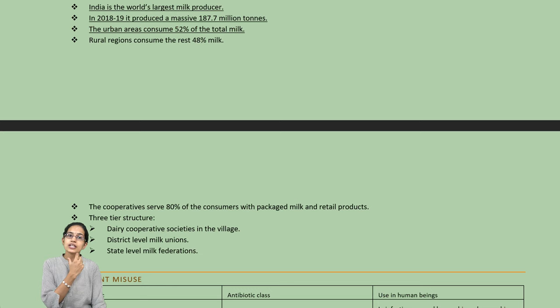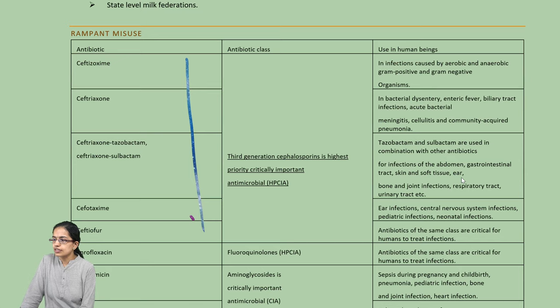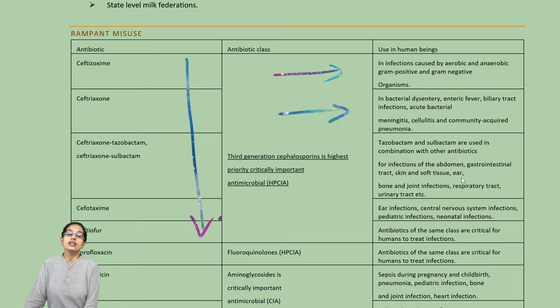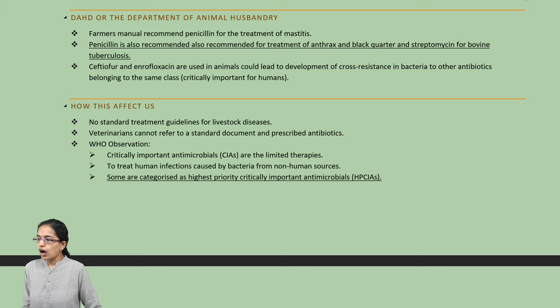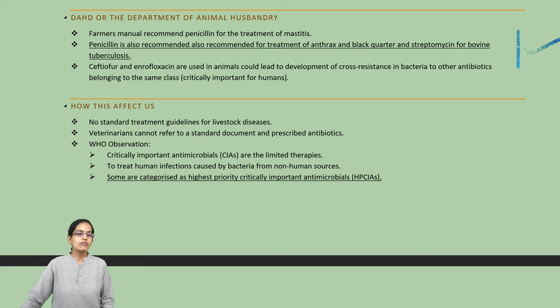Rampant antibiotic use or misuse in cattle can ultimately enter human systems. We need to categorize which antibiotic to use for which treatment. For example, penicillin is recommended for anthrax and blackwater, while streptomycin is recommended for bovine TB. Bacterial resistance is also being seen significantly.